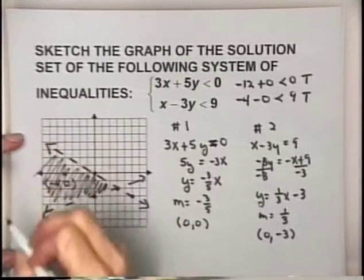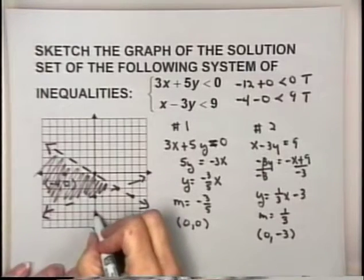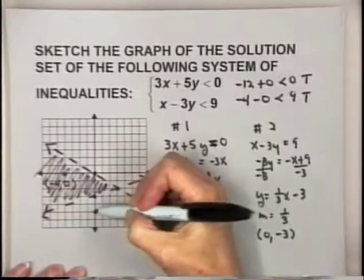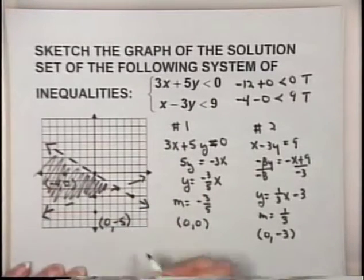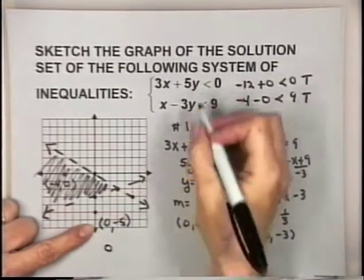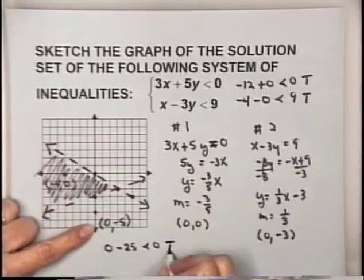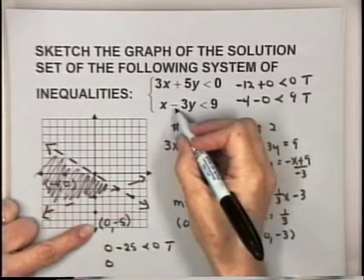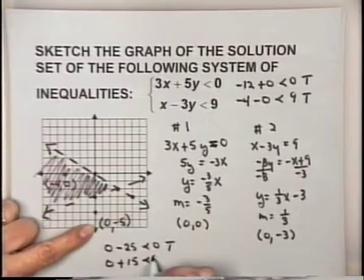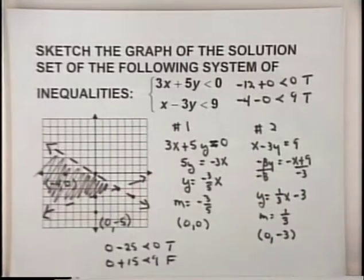To verify, let's try (0, -5) in another region. For inequality one: 3 times 0 plus 5 times negative 5 equals negative 25. Is that less than 0? Yes. But for inequality two: 0 minus 3 times negative 5 equals positive 15. Is 15 less than 9? No — false. Other regions will also not work, confirming that the left region is the solution set.